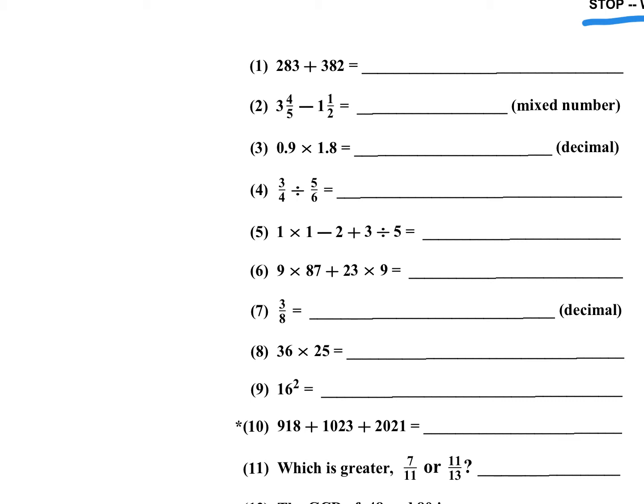Problem number one, 283 plus 382. You could add the ones: 3 plus 2 is 5, and then 8 plus 8 is 16. Carry 1. 2 plus 3 is 5, and 1 is 6. 665.